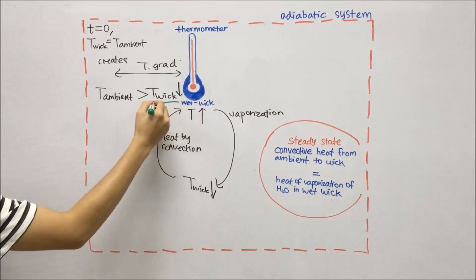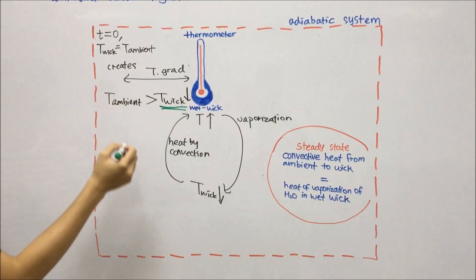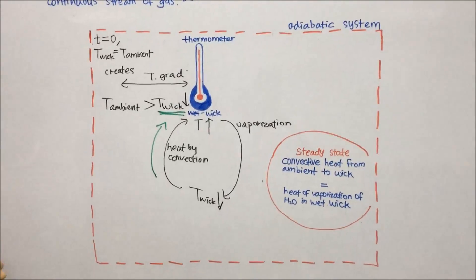Then the temperature of the wick decreases and is lower than ambient. Heat flows from the warmer to lower temperature region. Consequently, heat from the ambient is transferred to the wick by convection.